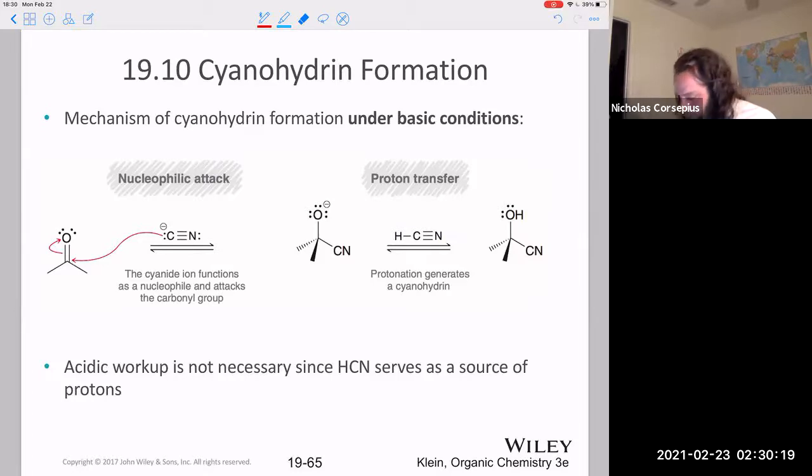Now we're left with our tetrahedral intermediate with the deprotonated oxygen, the alkoxide oxygen. This can go and receive a proton from the HCN. You don't need to worry about what's called an acidic workup, basically adding an acid or water to the mixture after that in order to protonate it because you have the HCN that can serve as a proton donor.